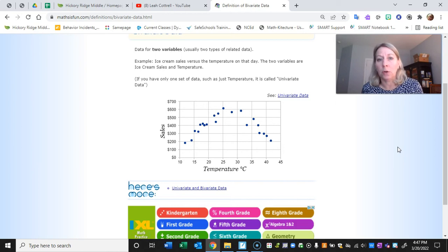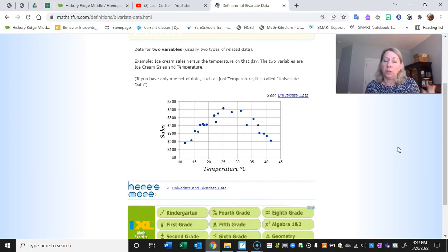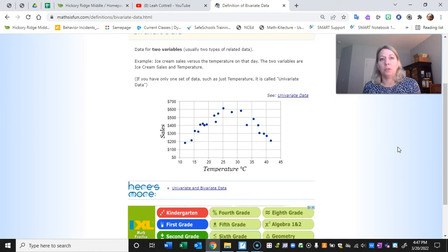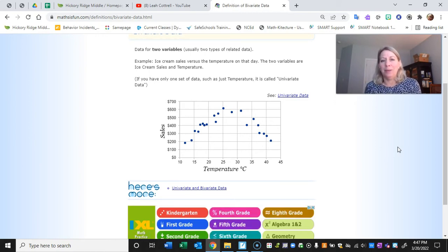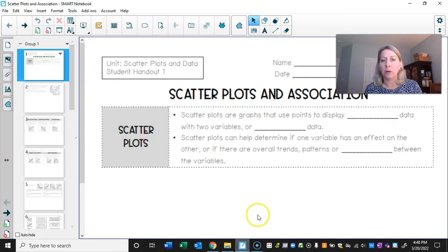Like will ice cream sales go up when the temperature goes up? And of course we can kind of already determine just by using our reasoning skills and what we know we've observed ourselves, we would probably say okay once that temperature goes up to a certain level we'll probably see sales increase on ice cream. If you only were to have one set of data, as it mentions here on this screen, if it was just like you're measuring temperature, that would be called univariate data because uni means one. All right so we're speaking about bivariate data here in this lesson today with scatter plots.